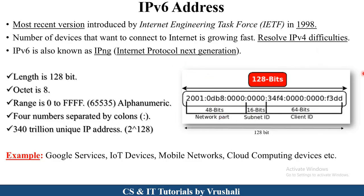In IPv6, the first 48 bits represent the network part, the last 64 bits are the host (client) part, and the middle 16 bits are called the Subnet ID. The Subnet ID is used to identify subnetworks — when a larger network is divided into smaller subnetworks. IPv6 is used in all demanding services like Google services, Internet of Things devices such as home automation systems, mobile networks like 4G and 5G, and cloud computing services such as Azure and Amazon. All the latest technologies and devices use IPv6 address.